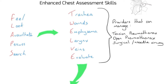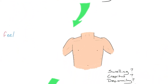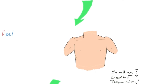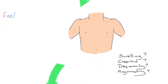The first step of the assessment is FLAPS. Starting with F for Feel — getting hands on the chest, feeling for any crepitus, that air or bone interacting within the chest wall. We're also feeling for any surgical emphysema, that rice-crispy bubbling sensation underneath the skin surface, suggesting damage to the surface lining of the lung with air escaping into surrounding tissues.